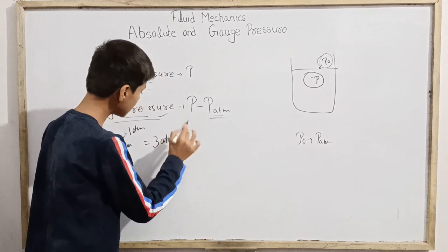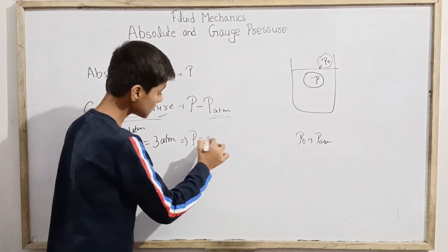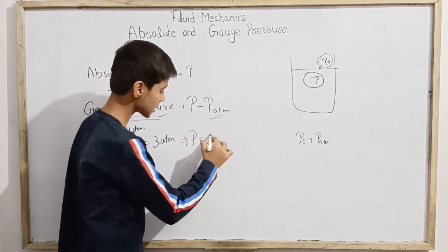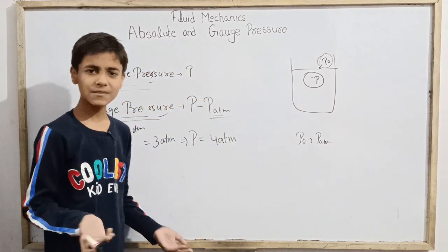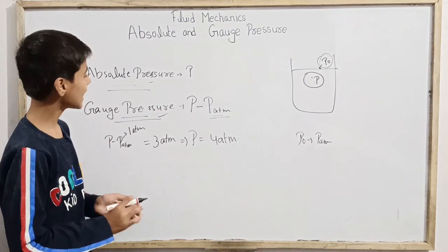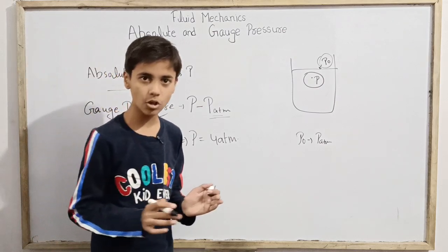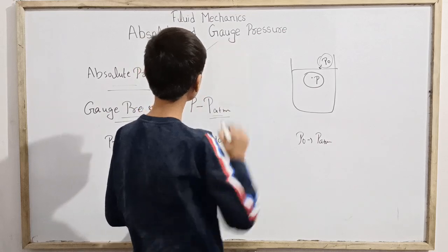If we are talking about 3 atm gauge pressure, then total absolute pressure is originally 4 atm. Why do we say 3 atm? Because we mean by it gauge pressure, which is in excess to the atmospheric pressure.